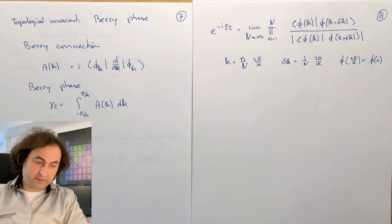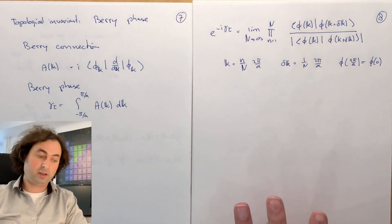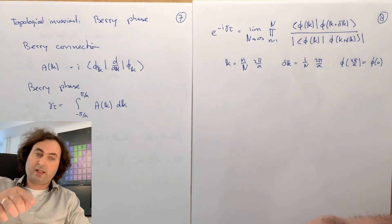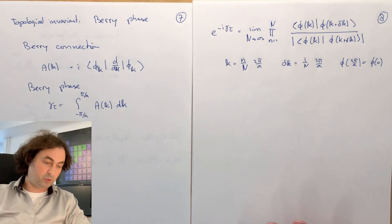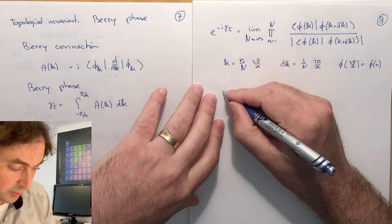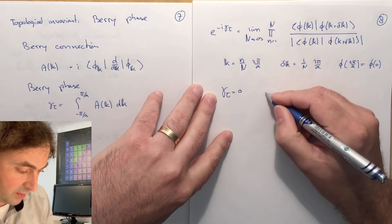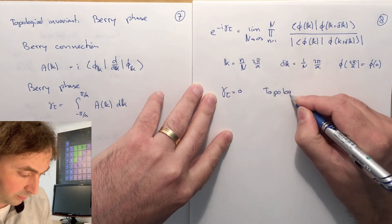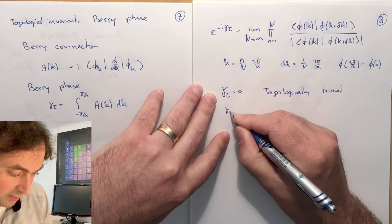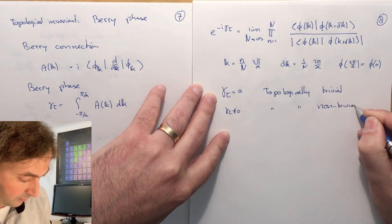This Berry phase is a topological invariant that can be used also for higher dimensional or complex Hilbert spaces. You just look at how your vector overlaps — how the phase changes when you go from one state to the other. We can now distinguish between topologically trivial and topologically non-trivial states: if the Berry phase is 0, we call the state topologically trivial; if the Berry phase is non-zero, we call the state topologically non-trivial.